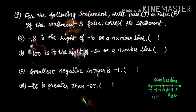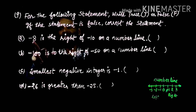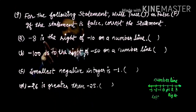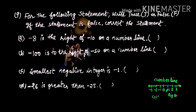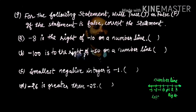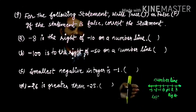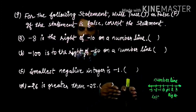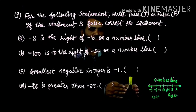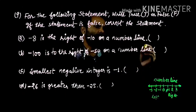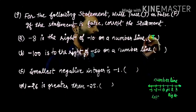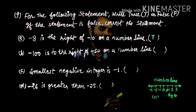So the first question: is minus 8 to the right of minus 10 on the number line? We write minus 8 here — first comes minus 8 and then minus 10. So this statement is true.